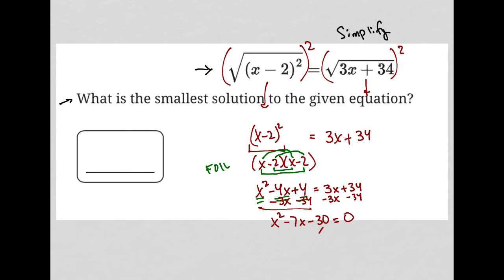I need to find two numbers which multiply to equal negative 30 but add up to negative 7. There are, in fact, two numbers that do that, and that would be positive 3 and negative 10. Negative 10 times 3 is negative 30, and negative 10 plus 3 is negative 7.